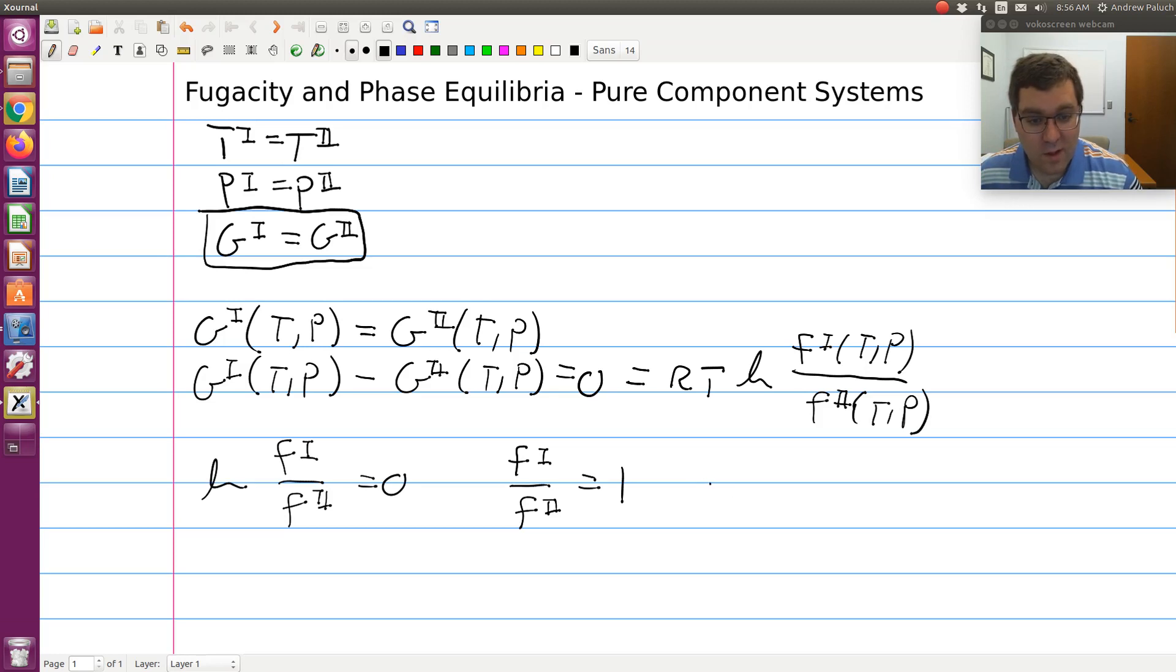Or finally, that the fugacity of phase one at T,P is equivalent to the fugacity of phase two at T,P. So we just showed that our equality of chemical potential or equality of molar Gibbs free energy criteria could be replaced with an equality of fugacities.